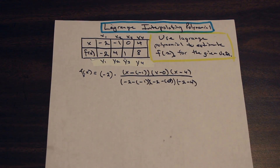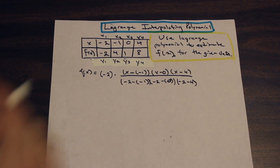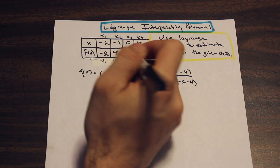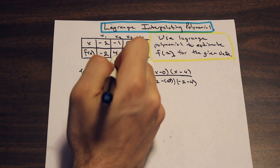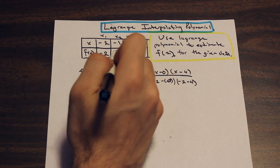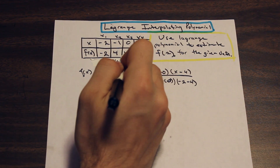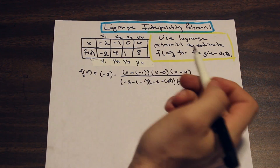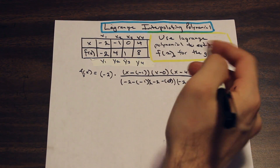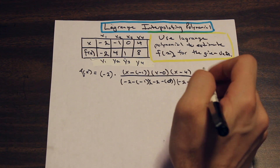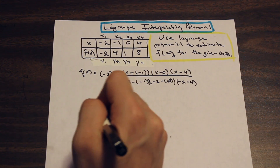Essentially, we're going to do exactly the same thing for each column. We'll next work on y2, then y3, then y4. All of these terms are added together.